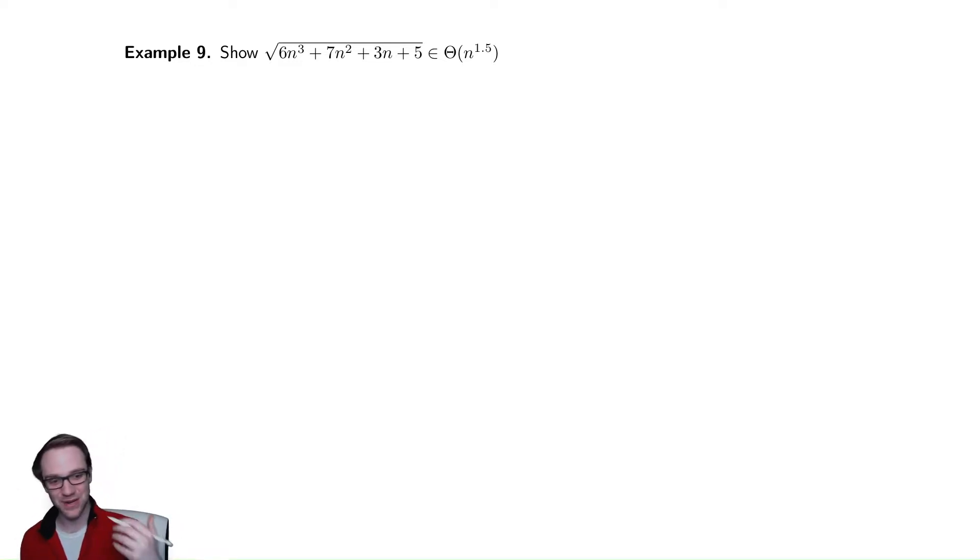When I solve this, I usually do it in a particular color scheme. I will usually bound above in red and bound below in blue. So I'll show that it is in big O in red and show that it is in big omega in blue, just so I can organize my thoughts a little better.